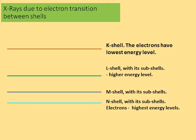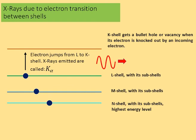The K shell has electrons at the lowest energy level. As we go to outer shells, the electrons have higher energy levels. As electrons jump from a higher energy level into the K shell or into a lower energy level, they emit x-rays equal to that difference in energy. An electron jumping in from the L shell into the K shell produces what's called a K x-ray, with subscript alpha because it jumped only one shell.